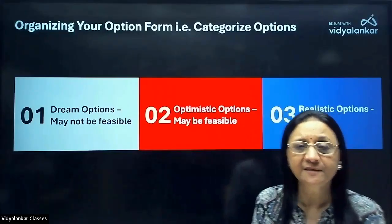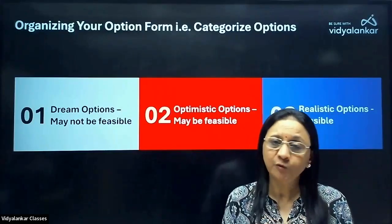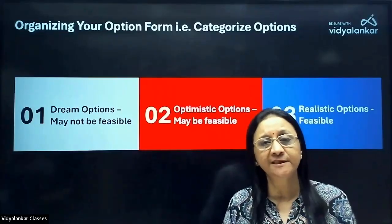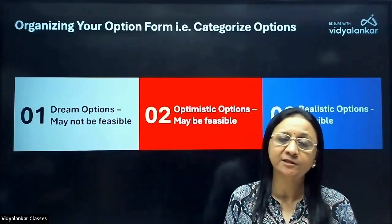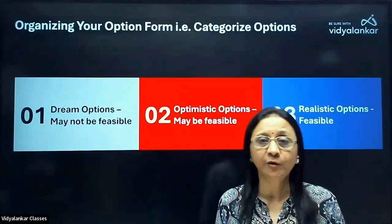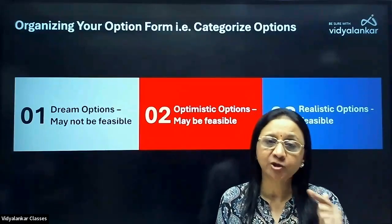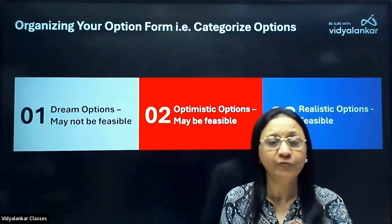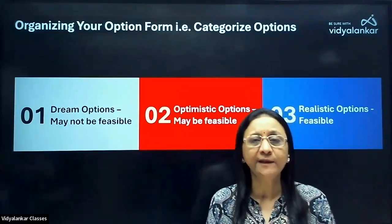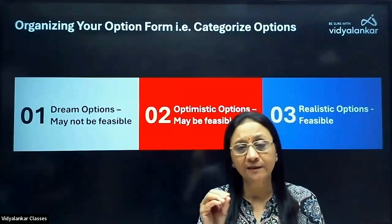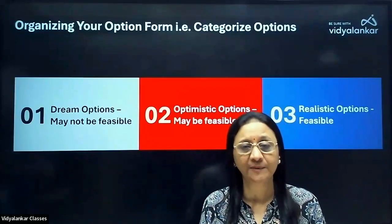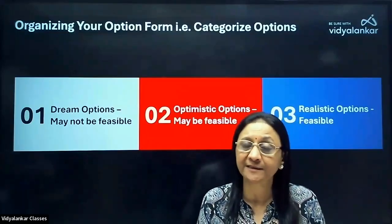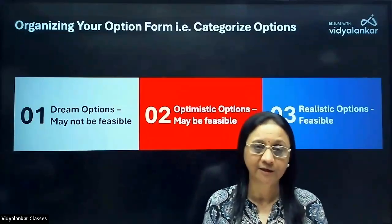Feasibility kaise samajh mein aati hai? Because you have your percentile, check your percentile against last year's cutoff. Once you get your state rank, check your rank with last year's rank for the cutoffs. So you will identify which options are your feasible possibilities where you can get a seat allotted.